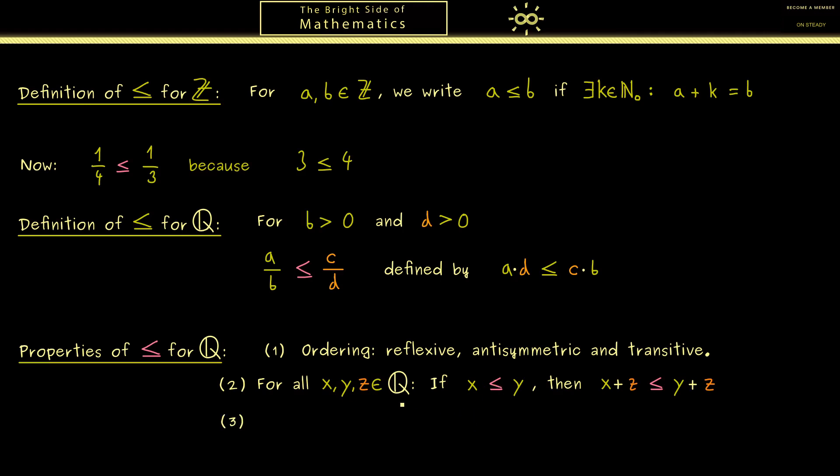Therefore, the next question would be, do we have the same for the multiplication? In fact, we can write down the property in the same sense. If x is less or equal than y, we can multiply with a rational number on both sides and we don't change the ordering.